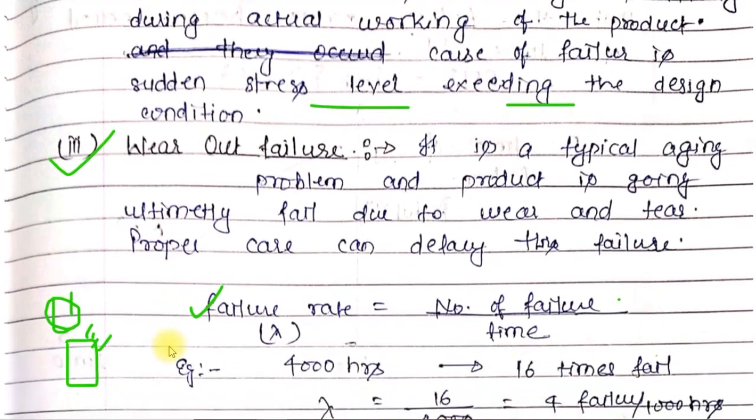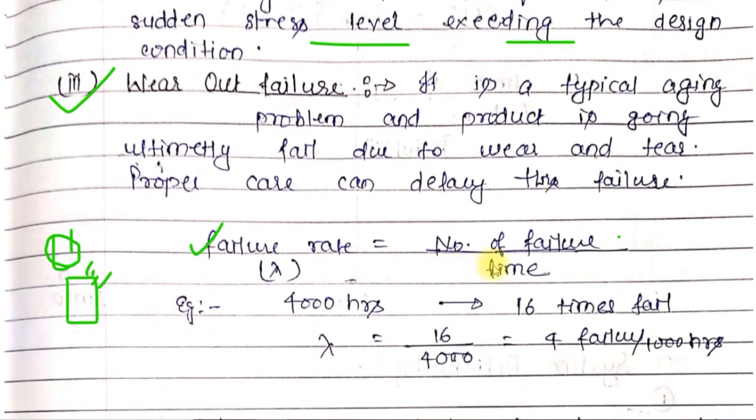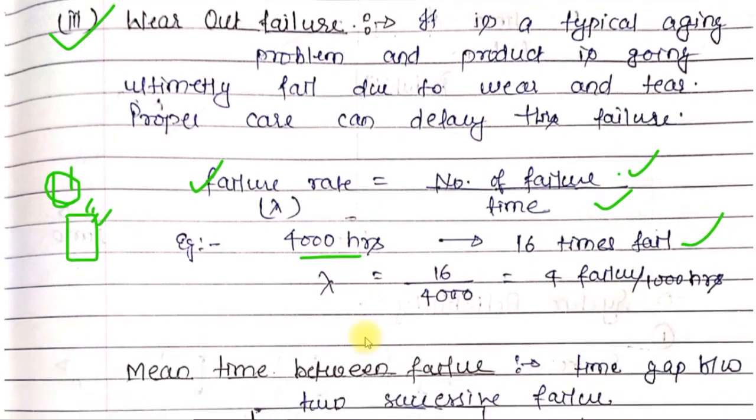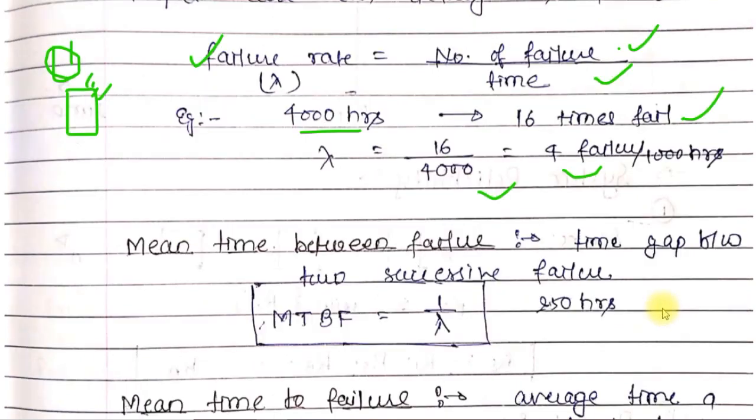Now let's look at failure rate. Failure rate is simply the number of failures per unit time. For example, if you took readings for 4000 hours and found that your mechanical component failed sixteen times, then your failure rate would be 16/4000, which is 4 failures per thousand hours.